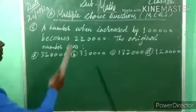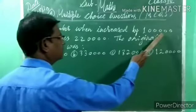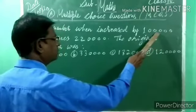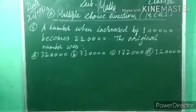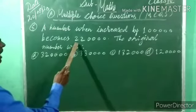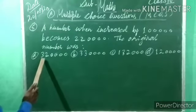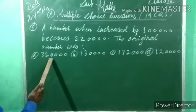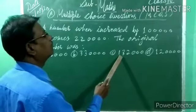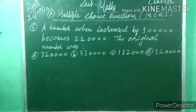Fifth question: a number when increased by one lakh becomes two lakh twenty thousand (2,20,000). The original number was — options: A) three lakh twenty thousand, B) three lakh thirty thousand, C) one lakh thirty-two thousand, D) one lakh twenty thousand.